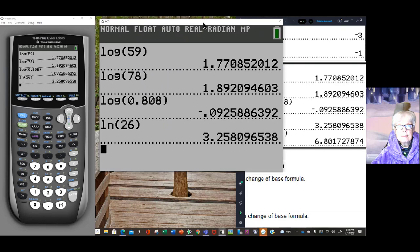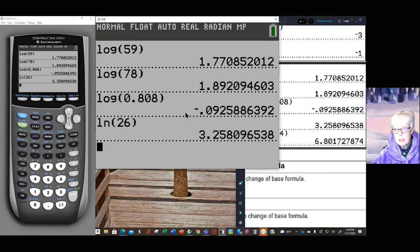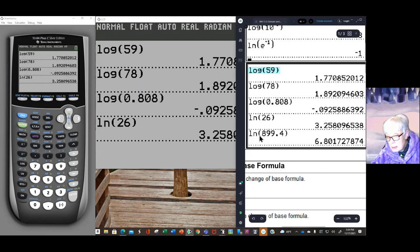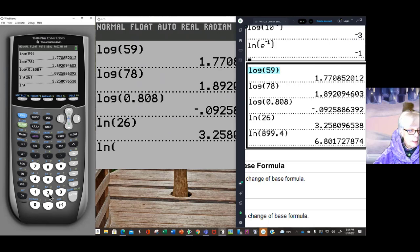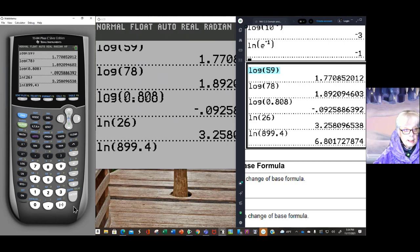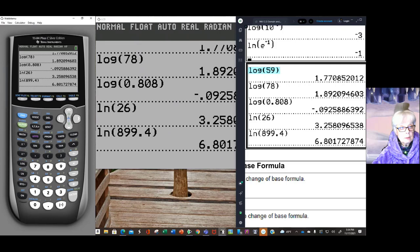And then finally, the last one. The ln of 899.4. And you can see what the answer is right here. The ln of 899.4. Enter. OK, let's move on.